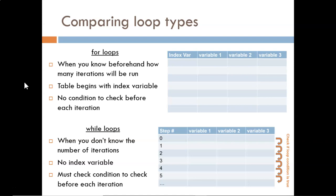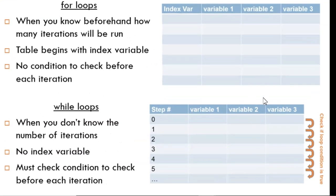What differences exist in the tracking tables that we have been using? First, on the right side of the while table, there is a note requesting that we check the condition after each row. This doesn't exist for the for table.